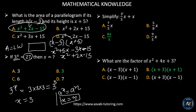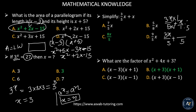The next problem: simplify 3 over 5x plus x. This is a fraction, so to combine fractions you need to find the common denominator. That gives you 3x over 5 plus x. The common denominator is 5, so you need to multiply x by 5 to get 5x. Now add only the numerators: that gives you 8x over 5. The correct answer is letter C.